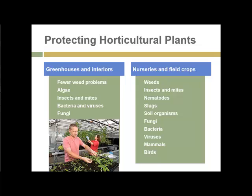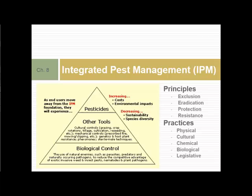This pyramid is one published by the Department of Agriculture. It puts biological control at the base of the pyramid. As you move up the pyramid, costs increase, environmental impacts increase, and sustainability and species diversity decrease. Pesticides are at the top as the most intensive and potentially damaging methods, with other tools in the middle and biological control at the bottom. In this sense, biological control means encouraging the natural enemies already present — introducing new organisms for biological control can be right up there with pesticide use in terms of causing potential problems.